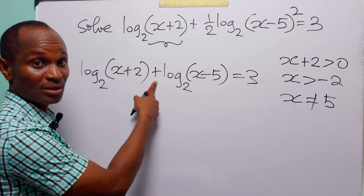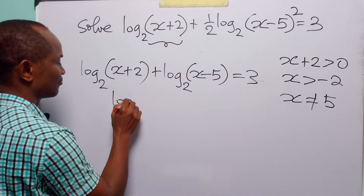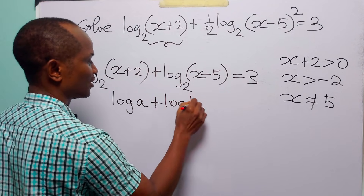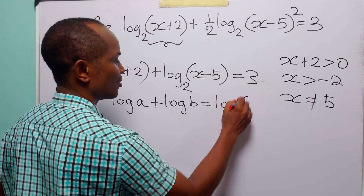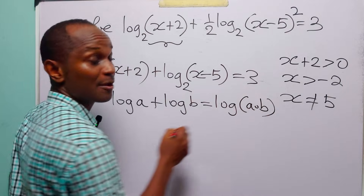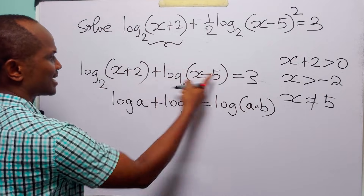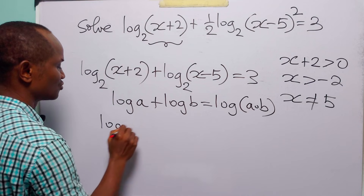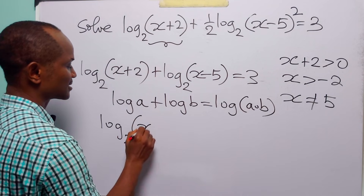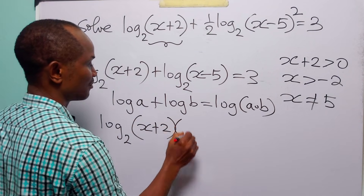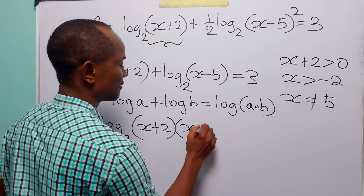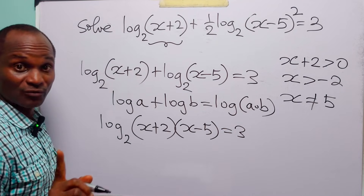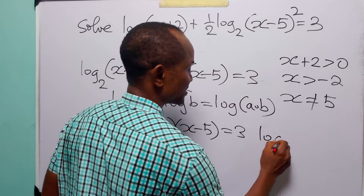This is addition, and remember that log a plus log b is equal to log of a times b, so we can write the left-hand side as log to base 2 of (x plus 2) multiplied by (x minus 5), equal to 3.